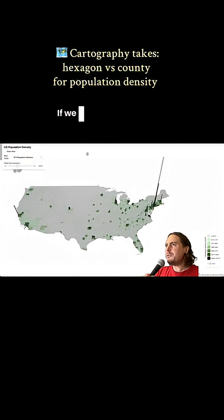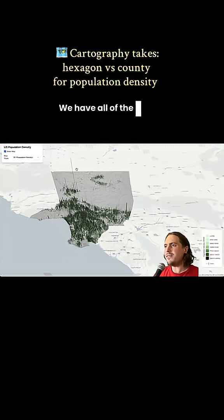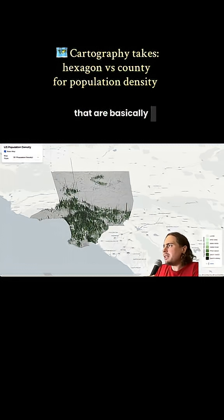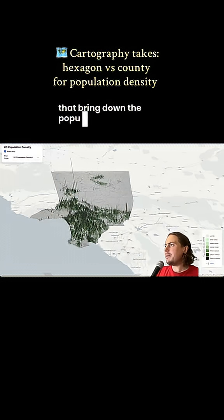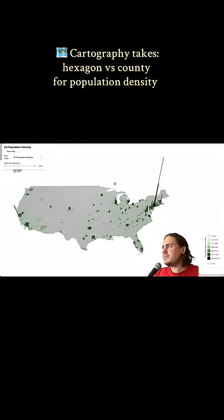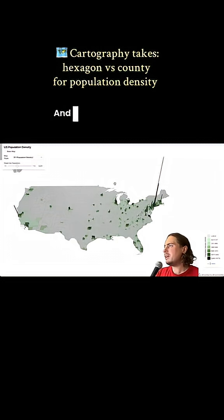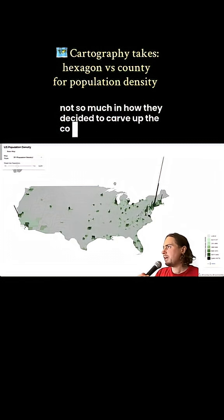Why is that? If we look at L.A. County in detail, I think it's clear L.A. County is full of empty space. We have all of these vast swaths of desert and mountain land that are basically unpopulated, that bring down the population density of the entire county. And that means that this map of population density by county is showing you almost as much about how they drew the county lines as it is about where people live. I'm interested in where people live, not so much in how they decided to carve up the country into counties.